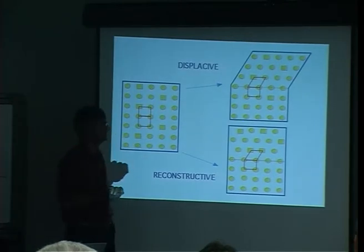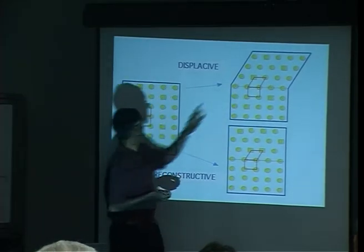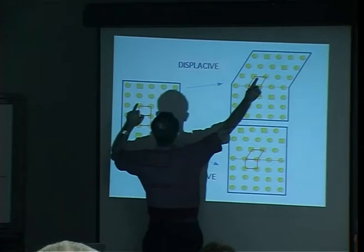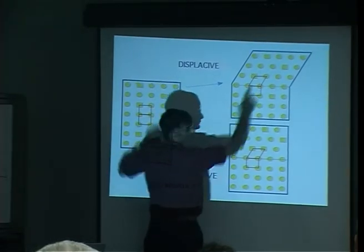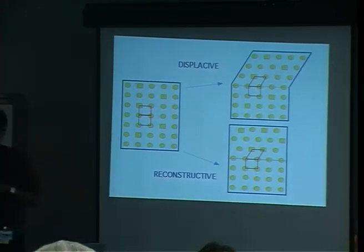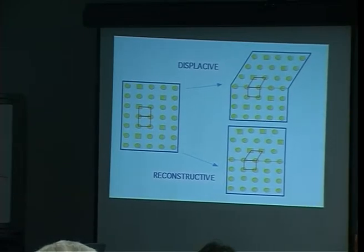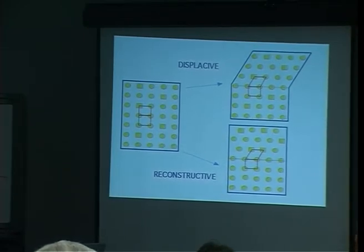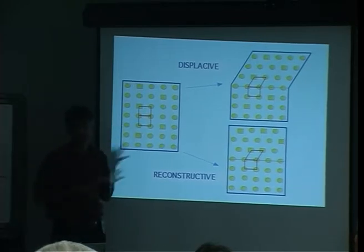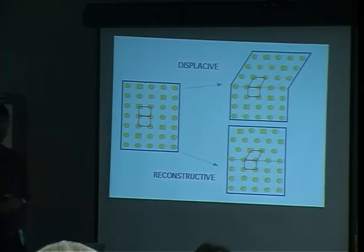Furthermore, there is an atomic correspondence — we know that each atom came exactly from a specific location in the parent. The neighbors are not altered. This is the basis of the shape memory effect: if I reverse the transformation, I recover exactly the original atomic arrangement. A displacive transformation is dominated by strain.